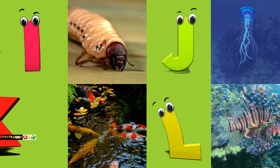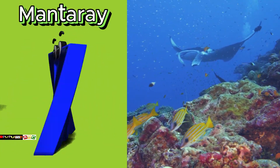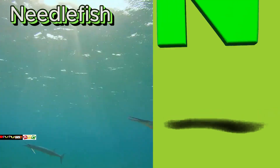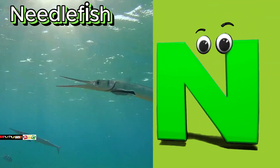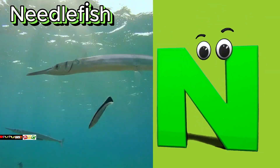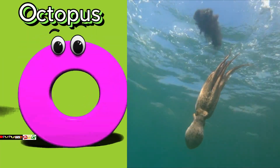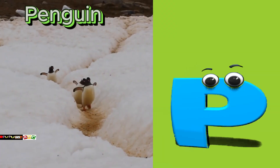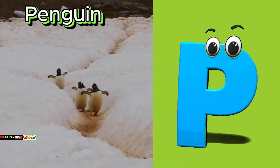M is for manta ray. Muh, muh, manta ray. N is for needlefish. Nuh, nuh, needlefish. O is for octopus. O, o, octopus. P is for penguin. Puh, puh, penguin.